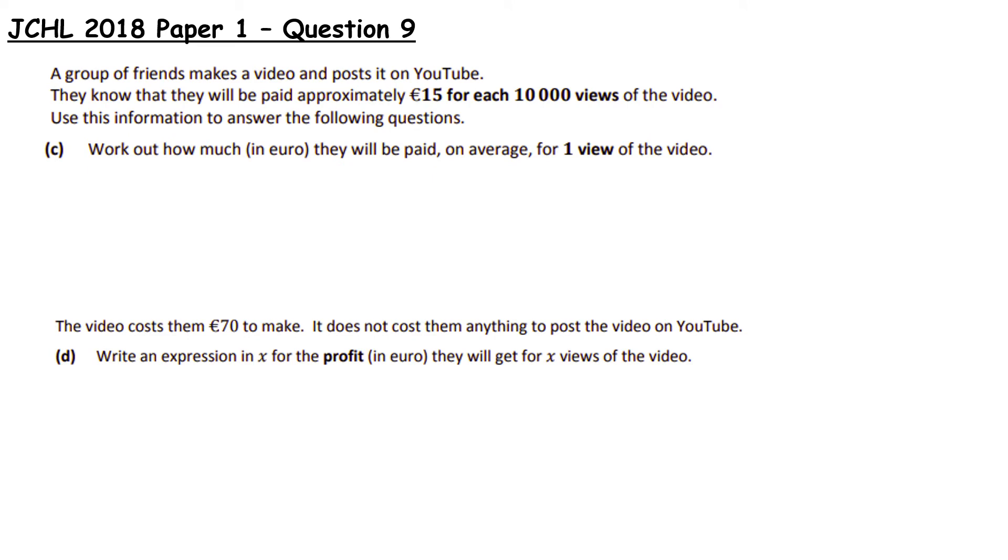Work out how much in € they'll be paid on average for one view. So this is bringing it back to per unit. So it's €15 per - now per means divide - so it's per 10,000. So what we can do is simply do 15 divided by, remember your fraction means divided, and we get something that's really tiny. So that will give us our answer in €. So it's €0.0015.